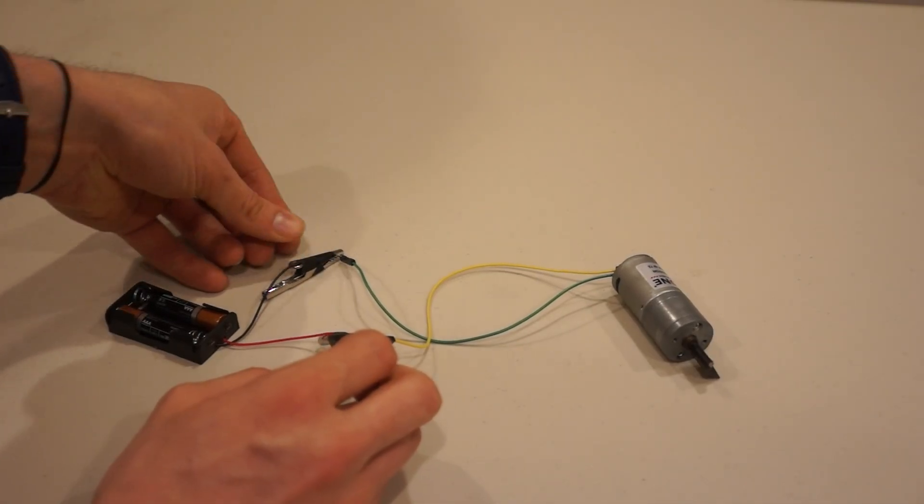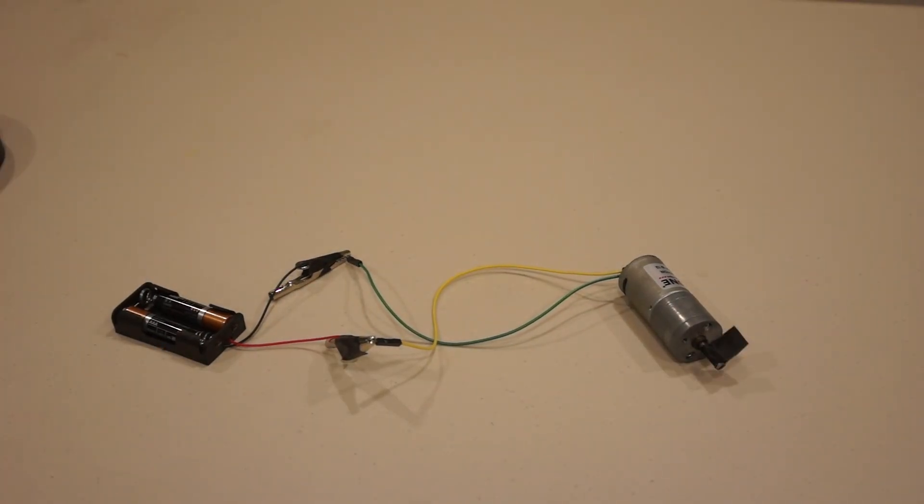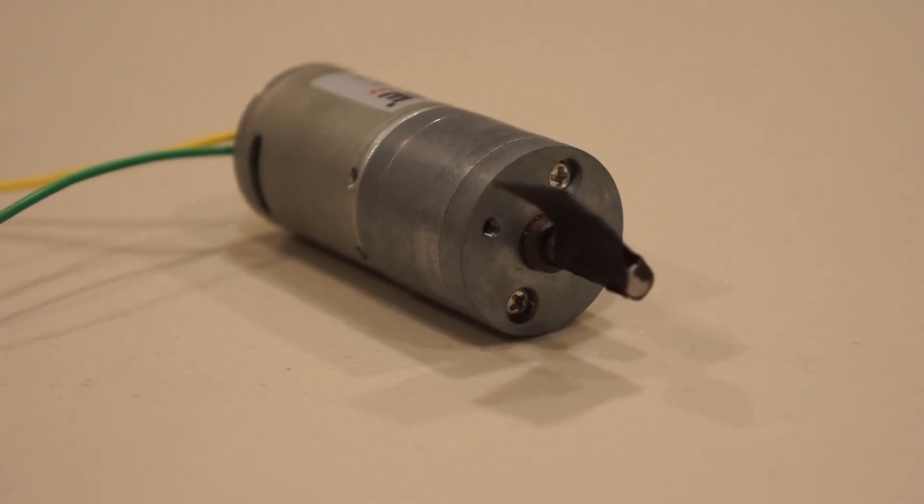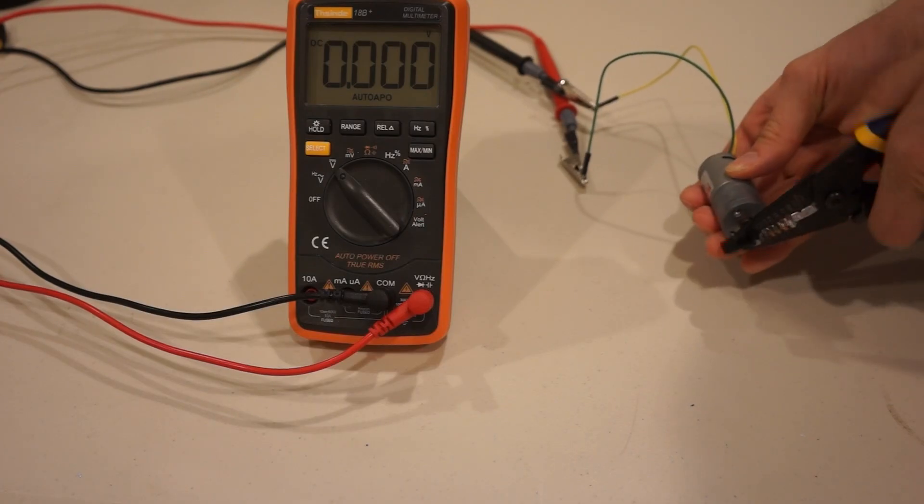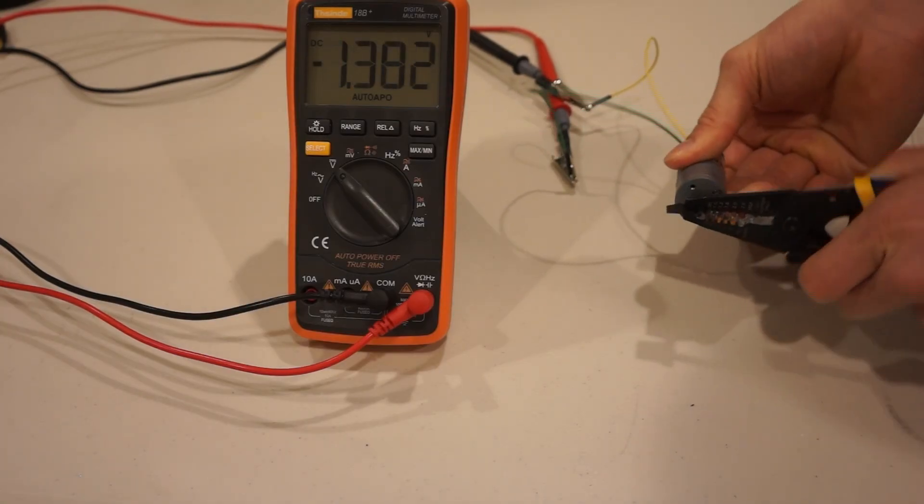As you know, when you supply a voltage across the terminals of a DC motor, the motor spins, you get a mechanical output. But what you might not have known is that the process works backwards too. If we rotate the motor shaft with a wrench, a voltage is generated across the terminals.